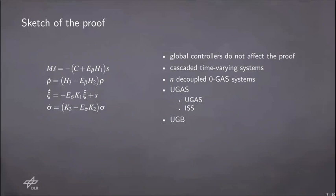The last step of the proof consists in showing that the system is uniformly globally bounded. At this point, in fact, using all the properties that we have shown so far, we can finally conclude that the overall system is uniformly globally asymptotically stable.